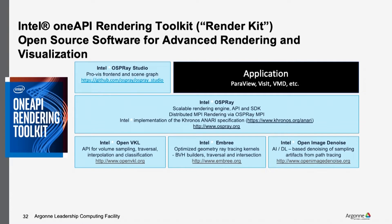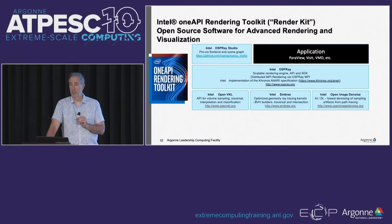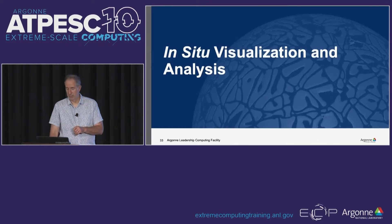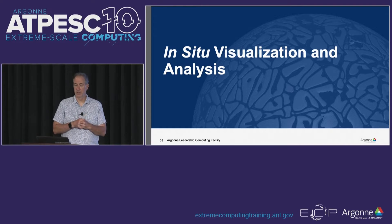At the low level, Intel's toolkit includes Image Denoiser, OpenVKL (the volume kernel library), and Embree for ray traversals, with OSPRay as the renderer sitting on top. Importantly, it's being integrated into many of the tools I've already talked about — VisIt, ParaView, and VMD all have back-end renderers that can leverage OneAPI. Nvidia also has similar libraries for ray tracing and volume rendering that are also being integrated into these same tools.